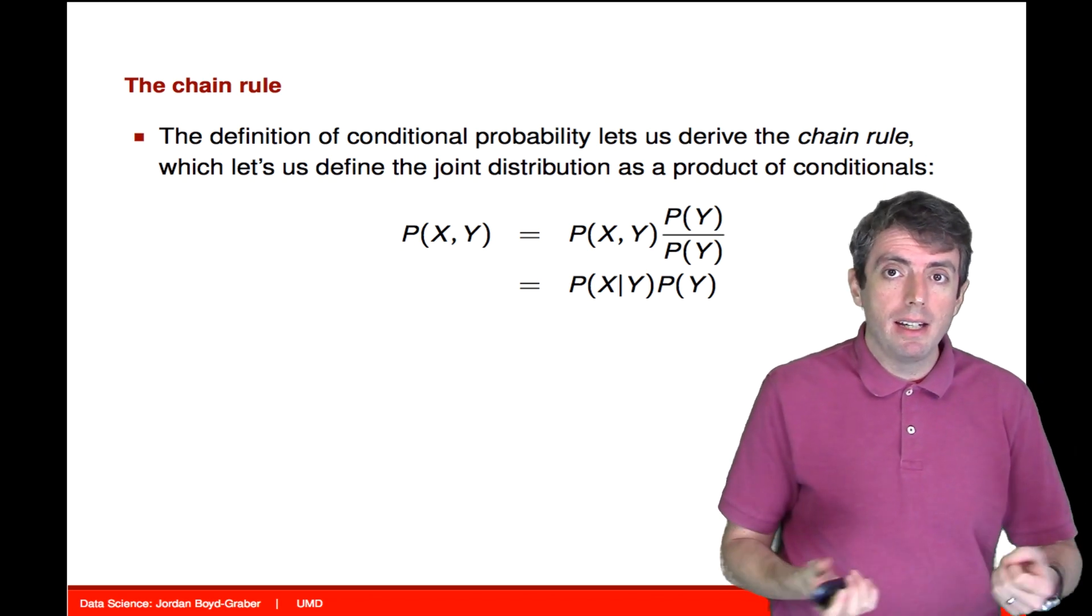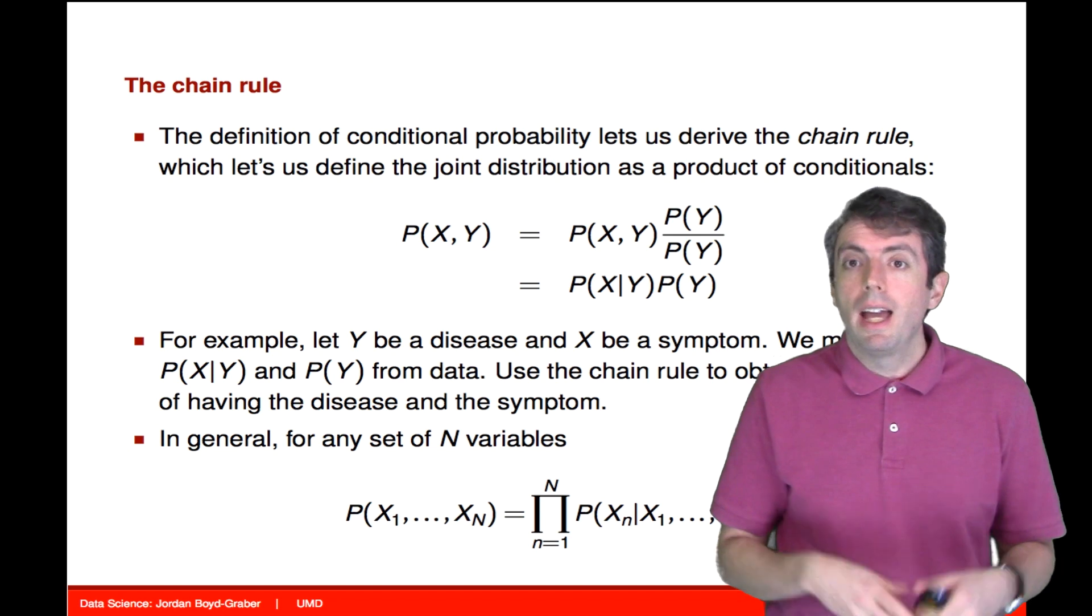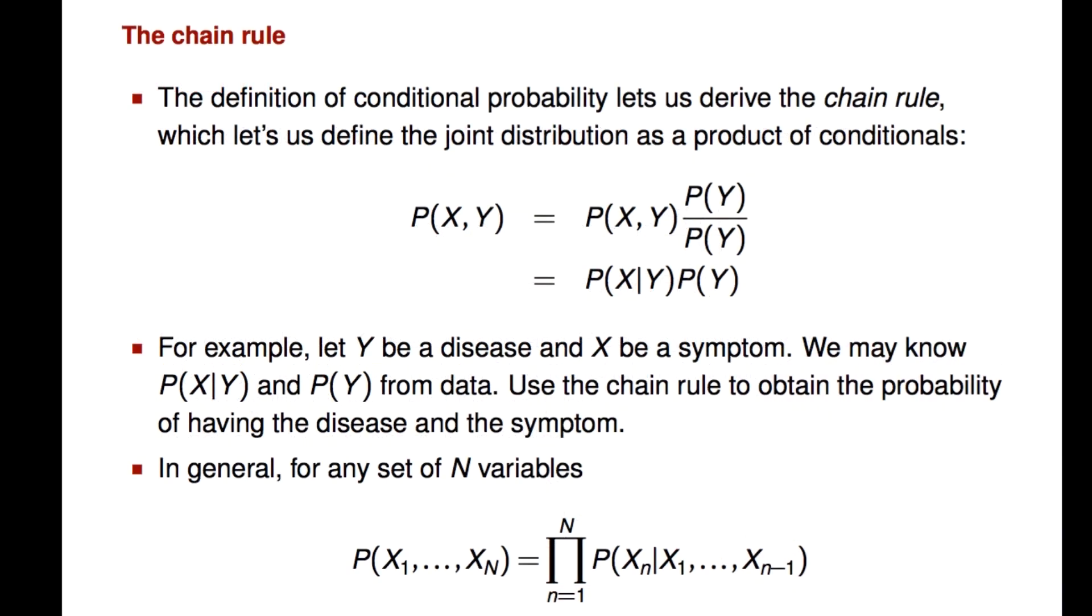And so now we can take a conditional probability of p given y, multiply that by the probability of y, and we get back the joint distribution. And in general, you can do this for any joint distribution. In general, you multiply the complete conditional distribution, probability one variable, condition on all the others. You multiply all of those together to get the complete joint.